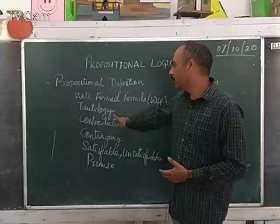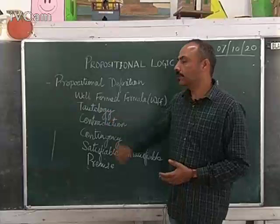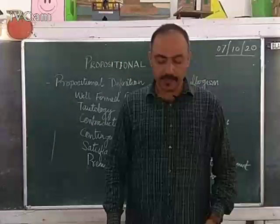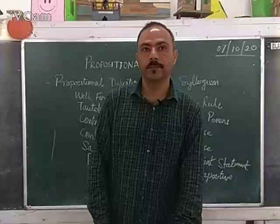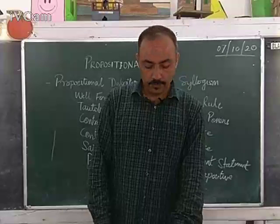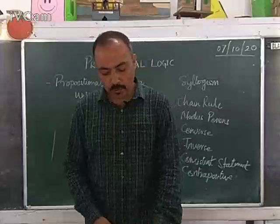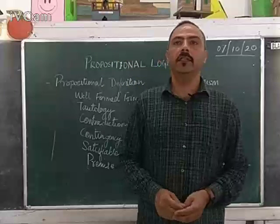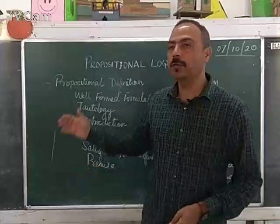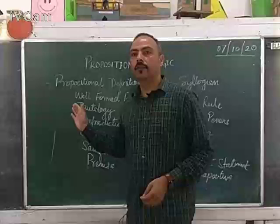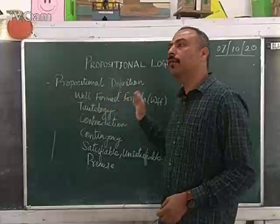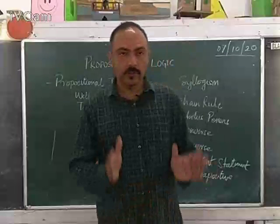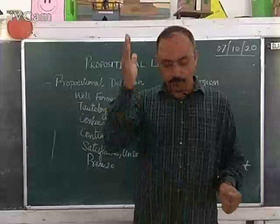The next term is tautology. A tautology is a proposition that is always true. In a truth table, a tautology has only true values. As we drew truth tables for different connectives in the previous class, if all the terms in the truth table come out as true, then it is called a tautology.